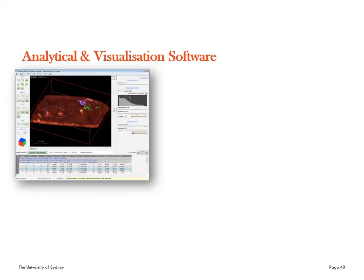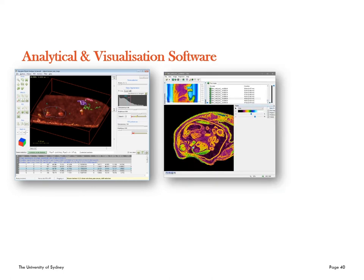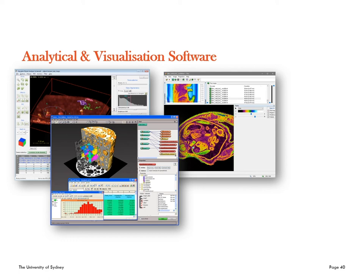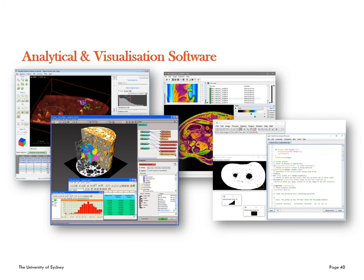Now onto some more fun stuff. We have a variety of software packages at the university for you all to utilize — they are incredibly powerful. Huygens: we have a site license so you can load this onto personal or work computers which are on the university network, and you require a UniKey login. CATATAN: we have a center license and it's distributed to pre-approved workstations across the university. Avizo: we have three floating licenses for Sydney Microscopy and Microanalysis. And Fiji: this one's totally free — you can download it and put it on every computer you want.